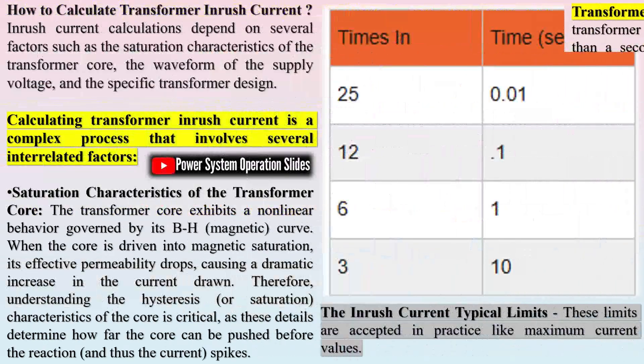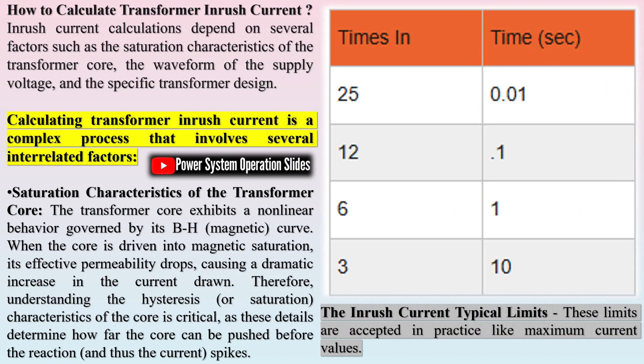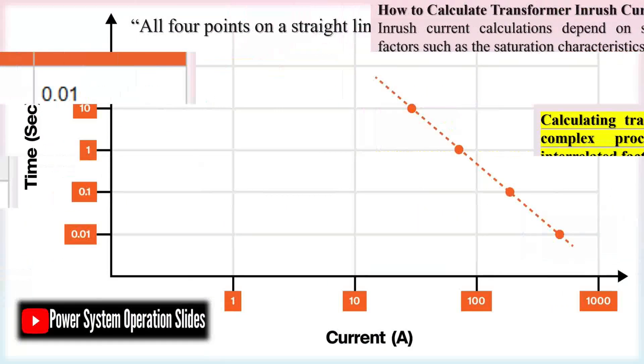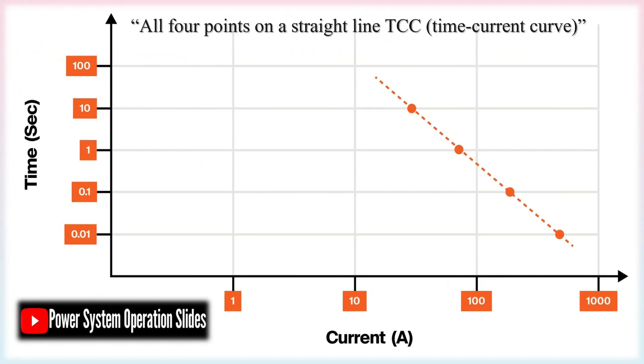In the accompanying chart, you'll notice that the flux density B of the transformer follows a hysteresis loop during operation. As the sinusoidal input voltage swings from positive to negative, the magnetizing current adapts accordingly, establishing the necessary flux density in the core. Once power is disconnected, a certain amount of residual magnetic flux BR remains in the core, with its level determined by the magnetic properties of the core material.